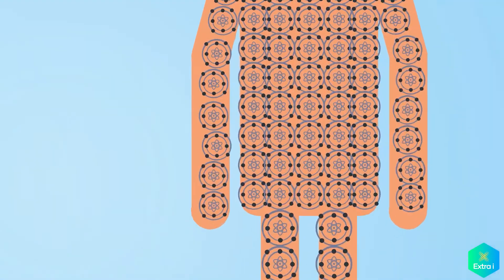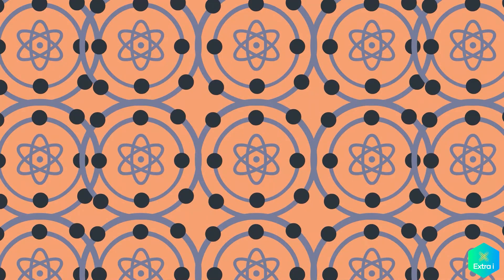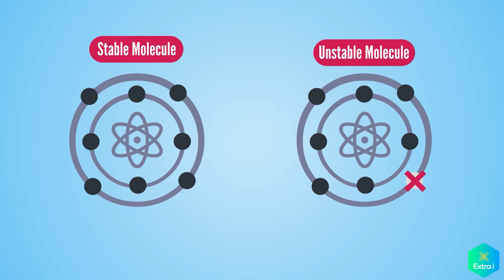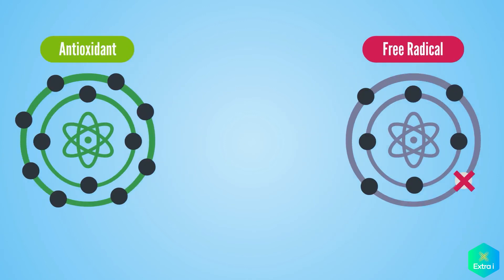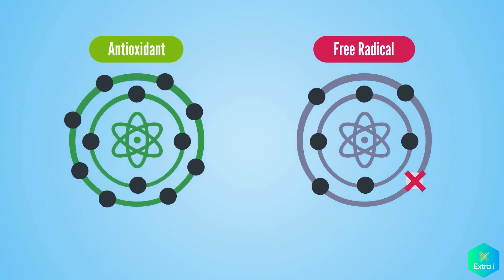These molecules can sometimes become damaged, and when they are damaged, they become unstable. These unstable molecules are known as free radicals, and this is where antioxidants can help, as they repair and reduce the number of free radicals in our body.